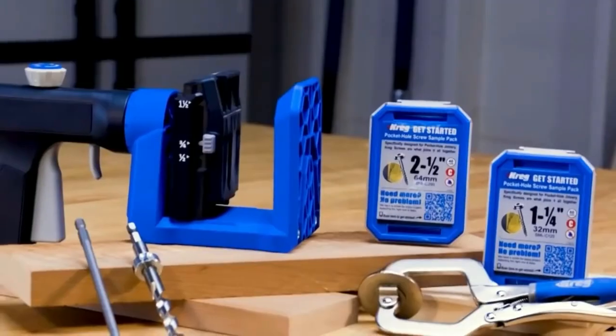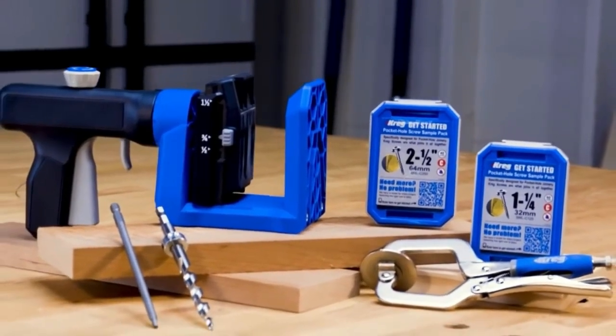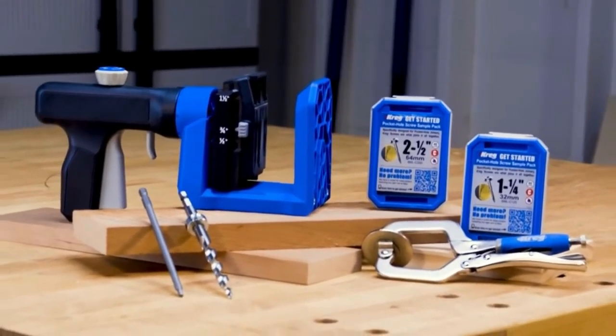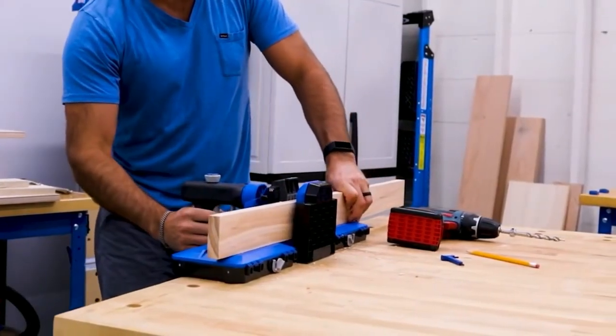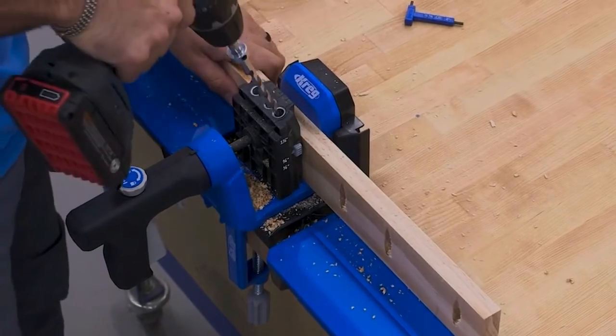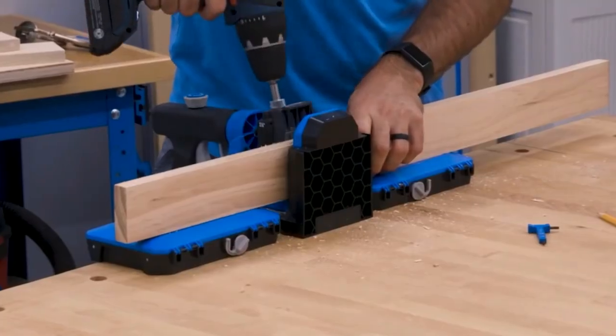However you use it, the Versa Grip handle rotates 360 degrees so you can always find a position that's comfortable and easy to use. Grip Max anti-slip material holds your workpiece securely in place.